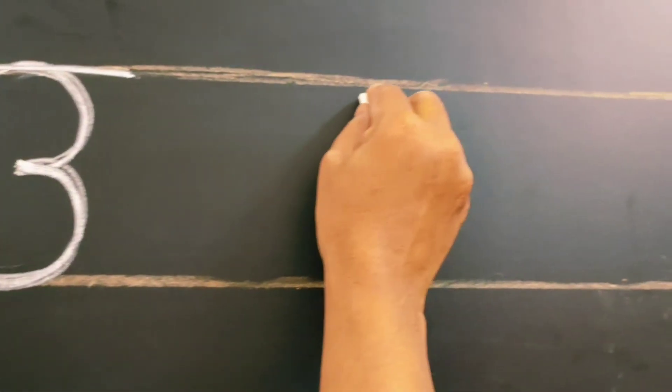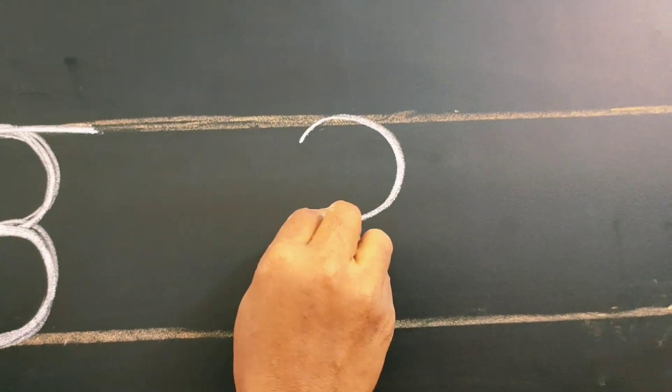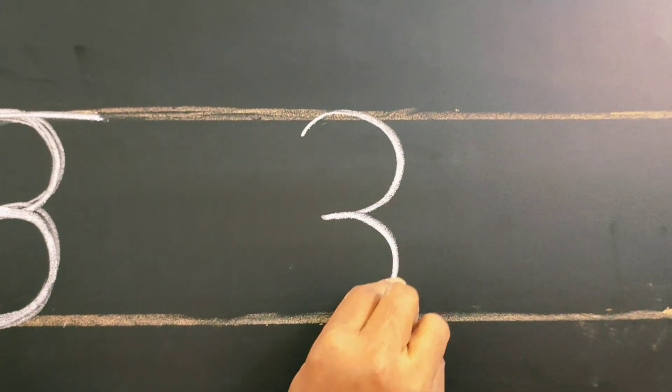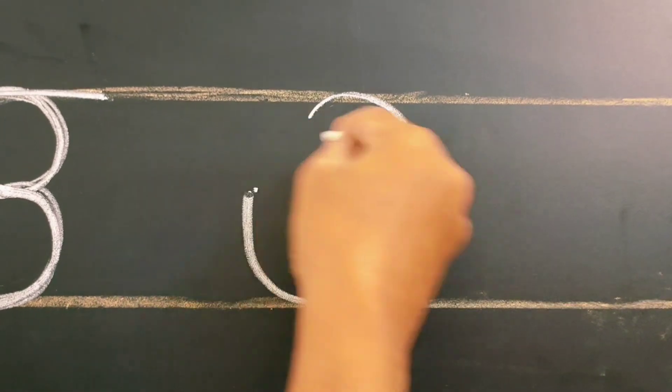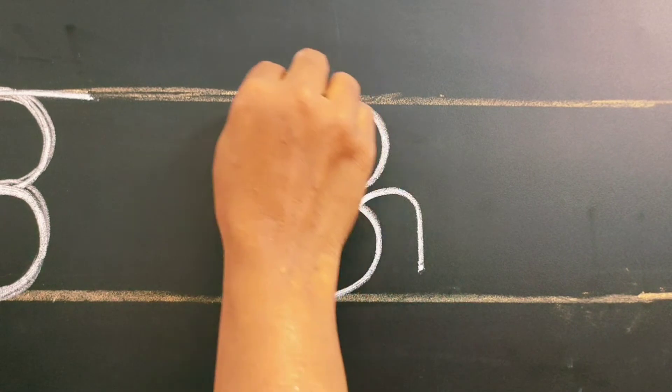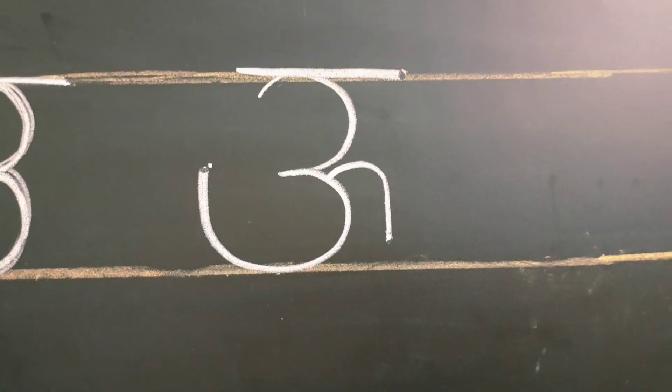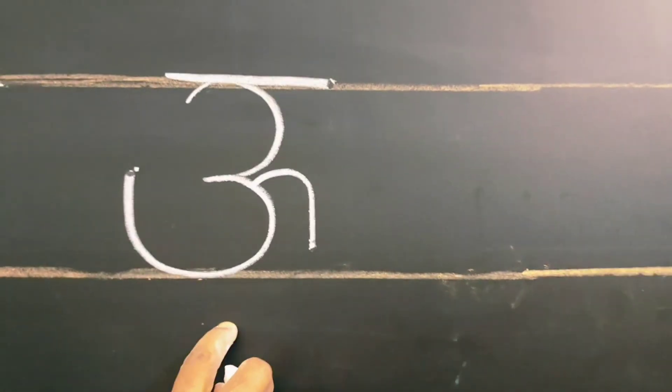And next shall we go to ooh. The same way. Left open curve. Joined with another left open curve. Little up. And next a slight curve down. And next a sleeping line. This is ooh. Ooh. Ooh.